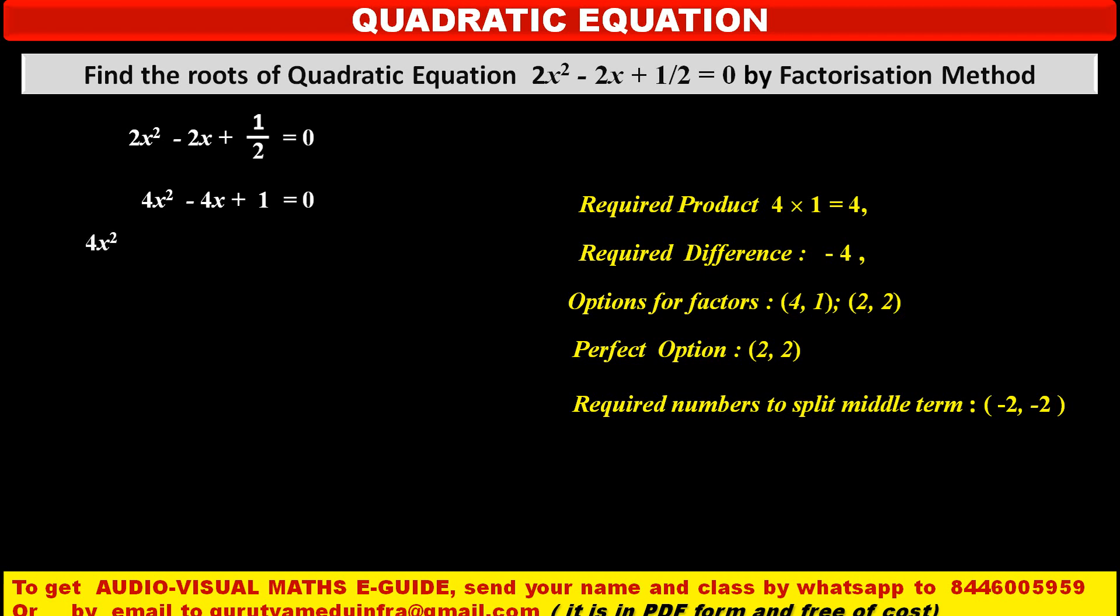Now, we have to rewrite the given quadratic equation by splitting its middle term. So, we get first term 4x² as it is. Then, splitting the middle term -4x, we get two terms: -2x - 2x as we have decided here, plus 1 constant term as it is, equal to 0.